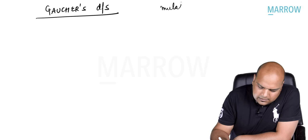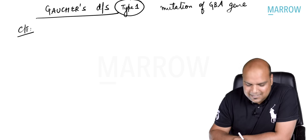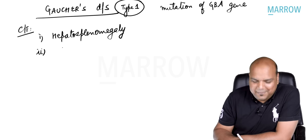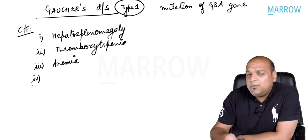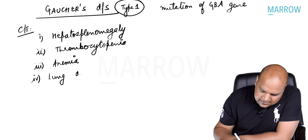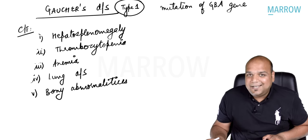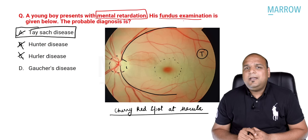Quick revision of Gaucher's disease: it is due to mutation of the GBA gene. Type 1 is the most common (types 2 and 3 are rare). Clinical features of type 1: hepatosplenomegaly; thrombocytopenia and anemia (think spleen → blood); lung disease; and bony abnormalities. Using knowledge of both subjects — ophthalmology and biochemistry — you would have been able to answer Tay-Sachs disease.